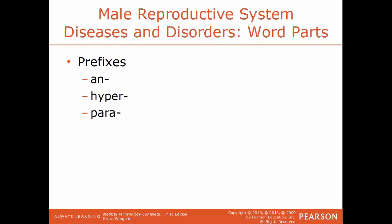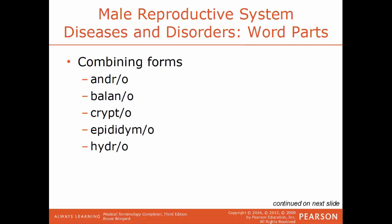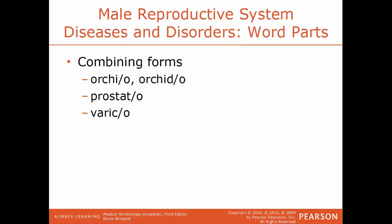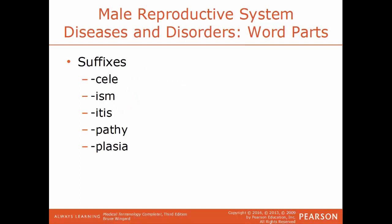Now we'll talk about some common diseases and disorders of the male system and the word parts. Prefixes: an means lacking or without; hyper means above; para means nearby or alongside. Combining forms: andro is a reference to male; balano is a reference to the glans penis; crypto is a reference to being hidden; epididymo is a reference to the epididymis, the structure where sperm cells go to mature; hydro is a reference to water; orchio or orchido is a reference to the testes; prostato is a reference to the prostate gland; varico is a reference to varicose veins. Suffixes: cele is a hernia; ism is a process or condition; itis is inflammation of; pathy is a disease; and plasia is formation or development.